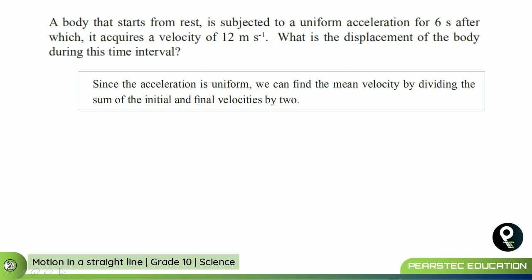A body that starts from rest — that means it starts from zero meters per second — is subject to a uniform acceleration. Uniform acceleration is a very important point to remember every time. It is moving for six seconds, after which it acquires a velocity of 12 meters per second. So the initial velocity is zero, the final velocity is 12 meters per second, and it is moving for six seconds.